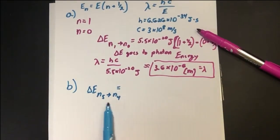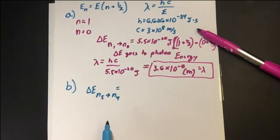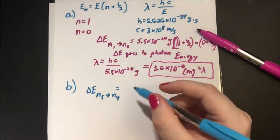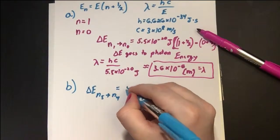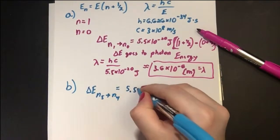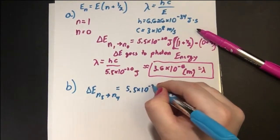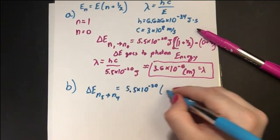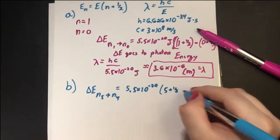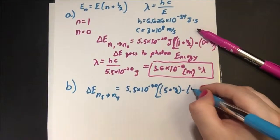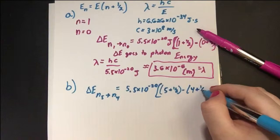So if we play it backwards and say, let's say we start in the fifth state and drop to the fourth, what is the energy of the photon that would be released? So once again, we are given the ground state energy, 5.5 × 10⁻²⁰ times (5 + 1/2) minus (4 + 1/2).